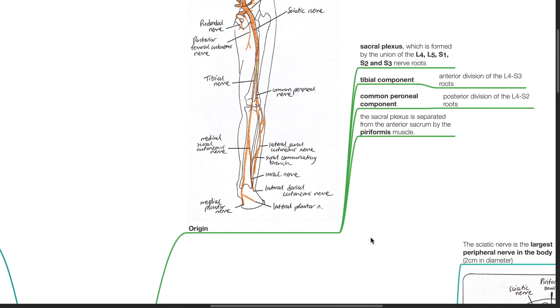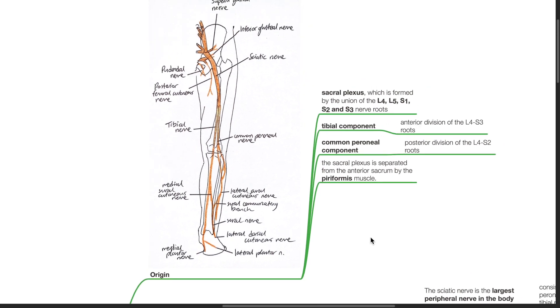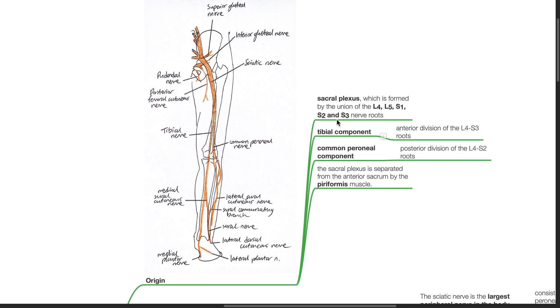Origin of the sciatic nerve. The sciatic nerve originates from the sacral plexus which is formed by the union of the L4, L5, S1, S2 and S3 nerve roots.